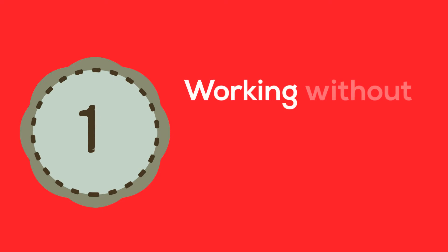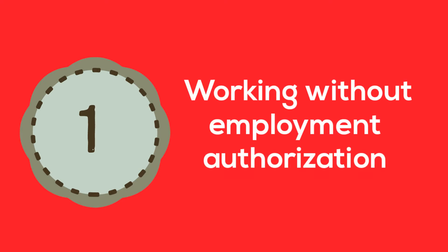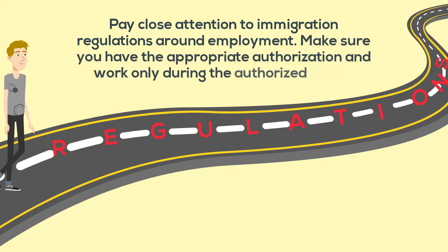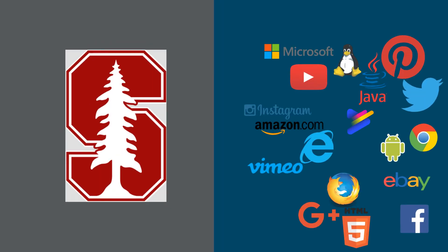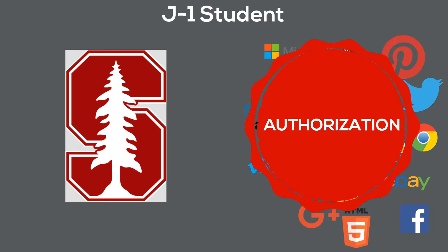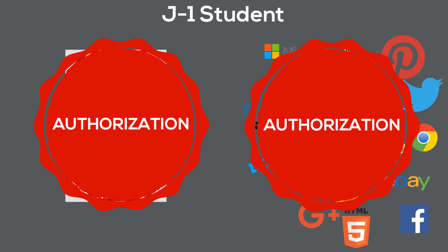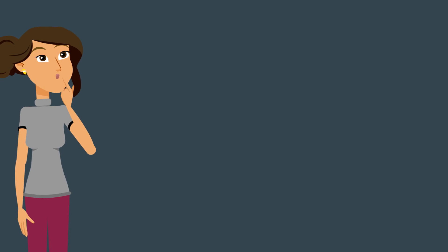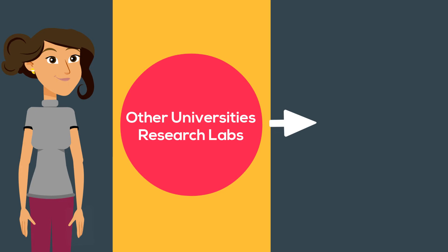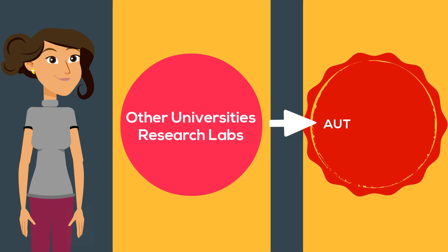Example number one: working without employment authorization. Pay close attention to immigration regulations around employment. Make sure you have the appropriate authorization and work only during the authorized period. All work done outside of Stanford University requires authorization. J-1s in the student category require authorization for both on- and off-campus employment. J-1 scholars are not allowed to work outside of Stanford, but they may engage in occasional off-site lectures or consultations where they must receive authorization prior to the activity.